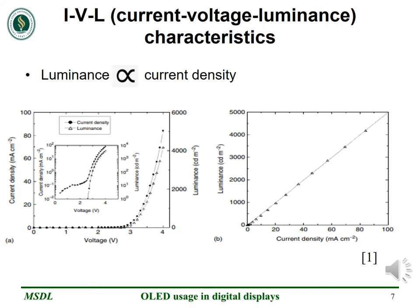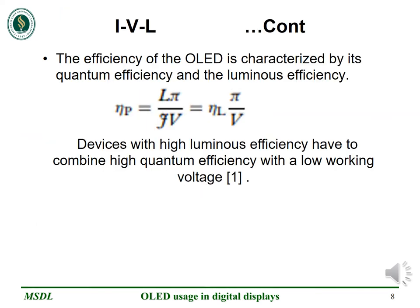Let us talk about the current-voltage-luminance characteristics. The first graph on the left indicates the relationship between current density, voltage and luminance. Here, the current increases exponentially and light is emitted above the threshold voltage. The second graph indicates the relationship between current density and luminance. It can be seen that the luminance is proportional to the current density, indicating that the quantum efficiency is constant over a wide range. In the given equation, the luminance efficiency is expressed in lumens per watt. This is the ratio of the optical flux to the electrical input, given by the equation above where V is the working voltage. EtaL and EtaP are functions of eye sensitivity photopic response, which is maximum in the green range.